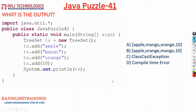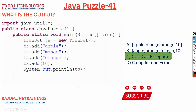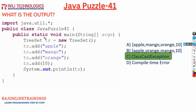So the correct output of this program is ClassCastException. Very important: in TreeSet, elements should be of the same type. If elements are of different types, it throws ClassCastException. The correct answer is option C. Now, if you apply generics to the same code — for example, specifying the generic type as String for this TreeSet — we are applying String type here.